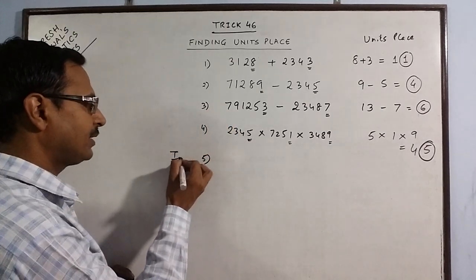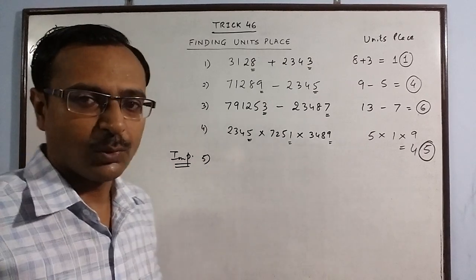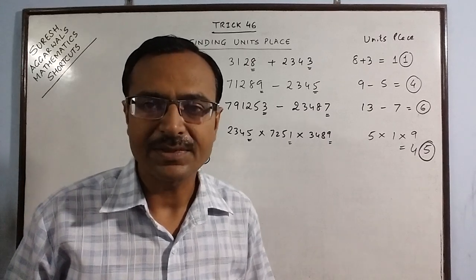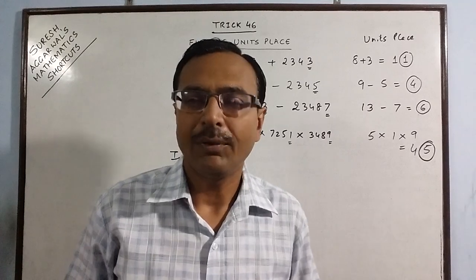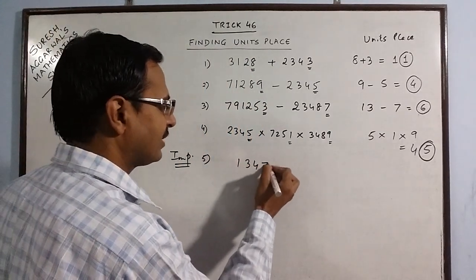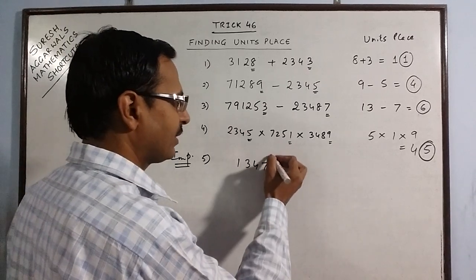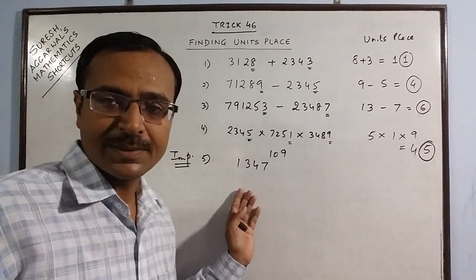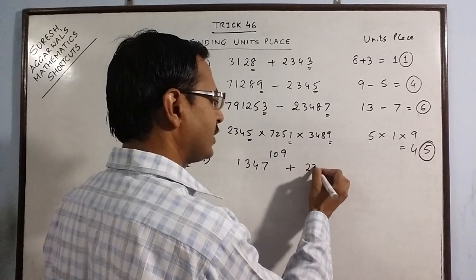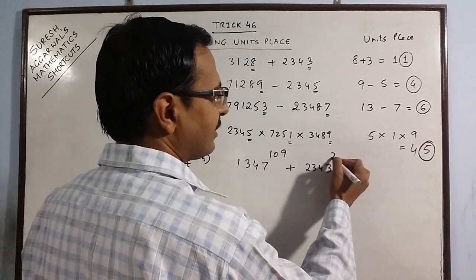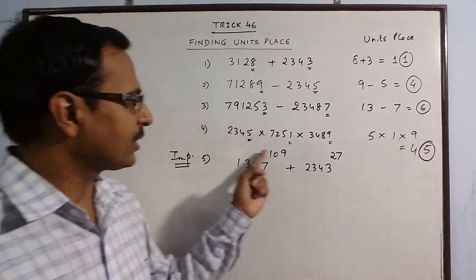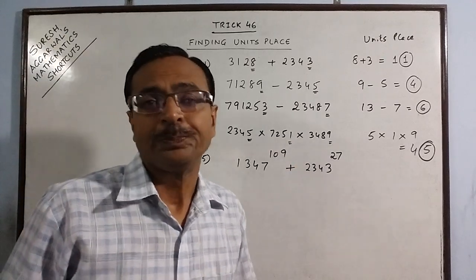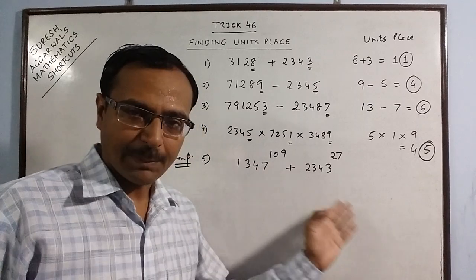Now we come to the most important part which is asked in most competitive exams — NTSC, railway recruitment, or SSC exams. To find the unit's place of, say, 1347 raised to a very large power such that you cannot expand it. For example: 1347 raised to power 109 plus 2343 raised to power 27. Obviously no one can calculate this directly.